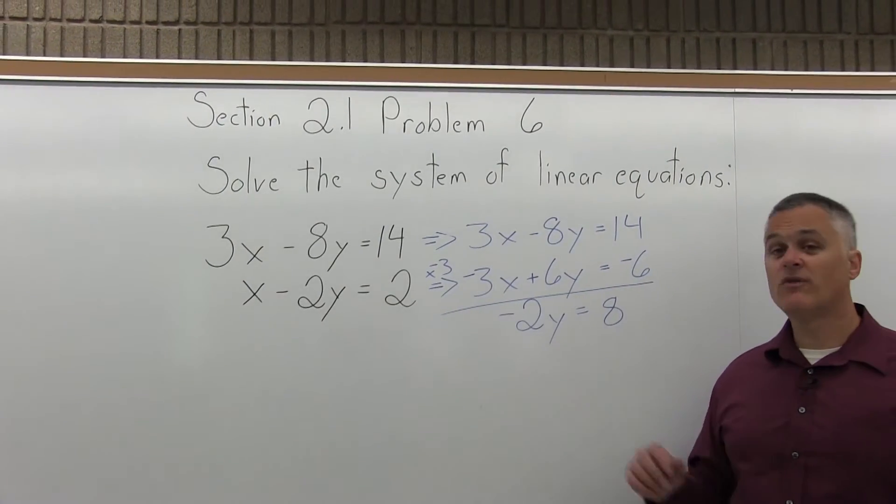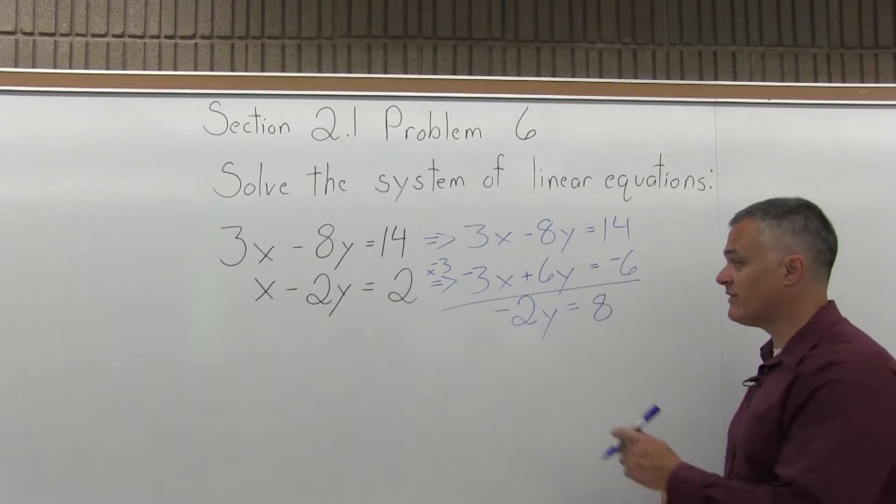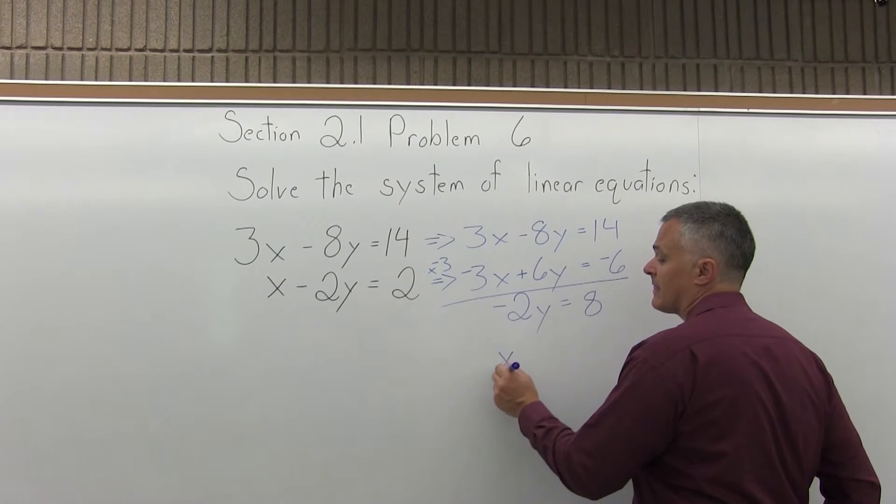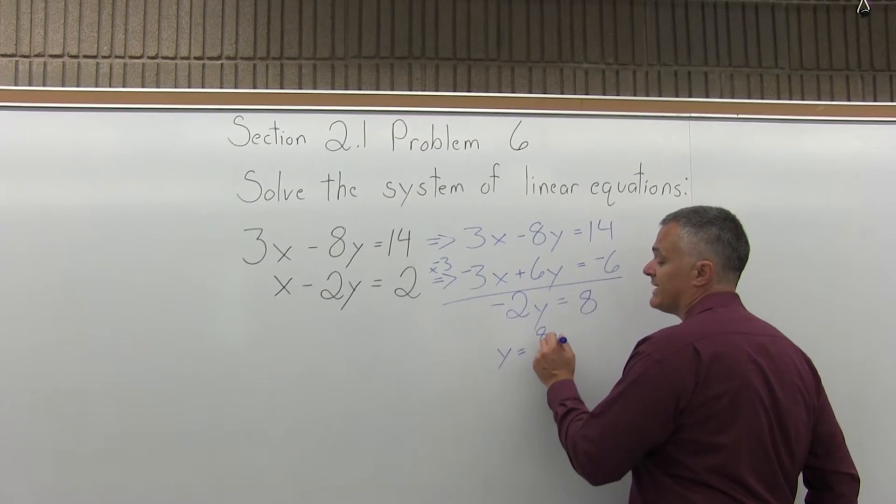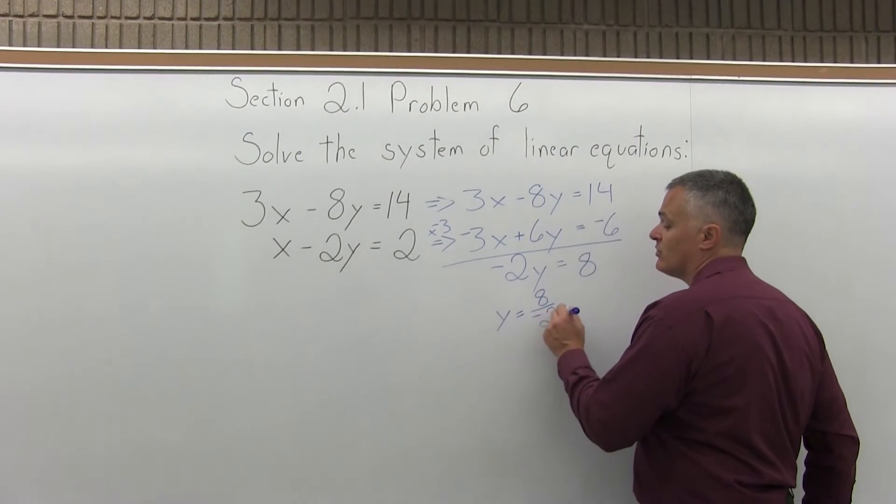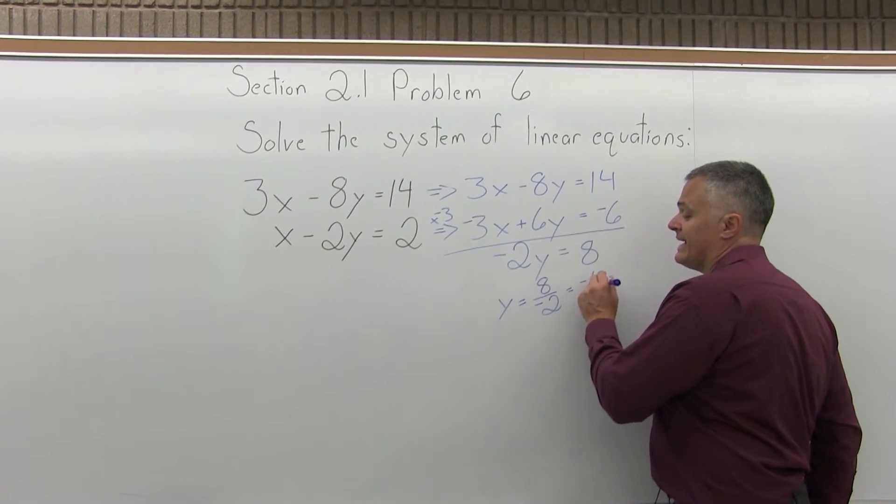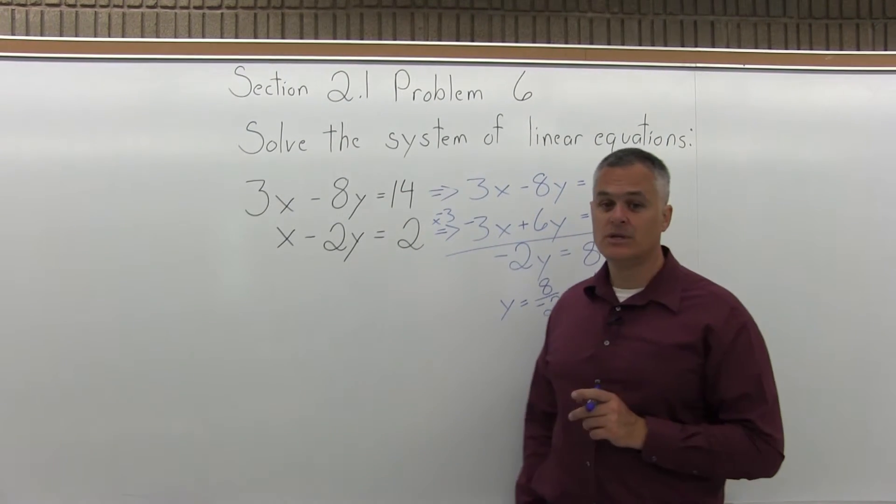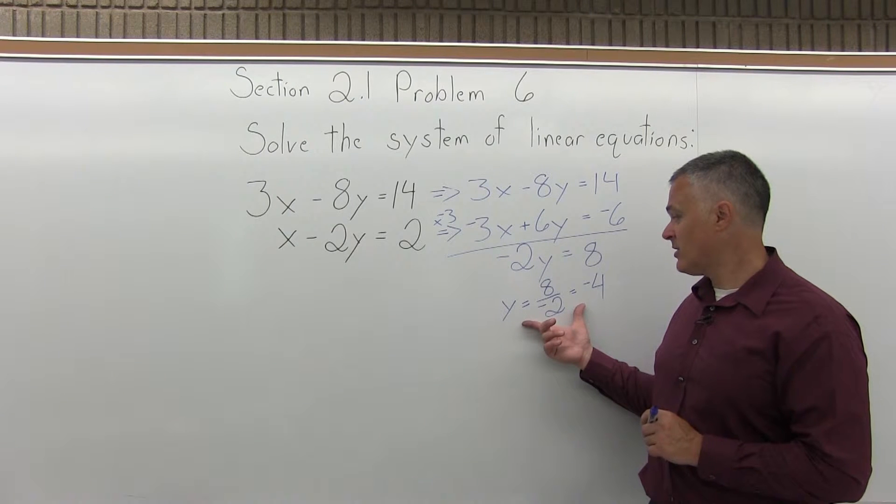Step three, solve for the remaining variable. So, divide out the negative 2. I'll have y equals 8 divided by negative 2 is negative 4. So, that's step three. I solved for my remaining variable.